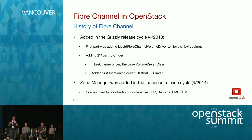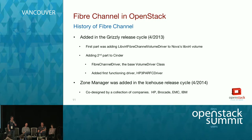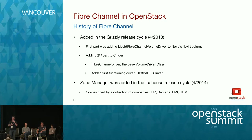We went back to the working group, with a lot of companies, and co-designed what we now call the Fibre Channel Zone Manager. The Zone Manager's job is to do automated zoning. When you do a volume attachment, it automatically creates the zone in the Fibre Channel switches so the two endpoints can see each other. This was added in the Ice House release cycle, with Brocade, HP, EMC, and IBM all involved. It's a great example of different companies working together as a community.